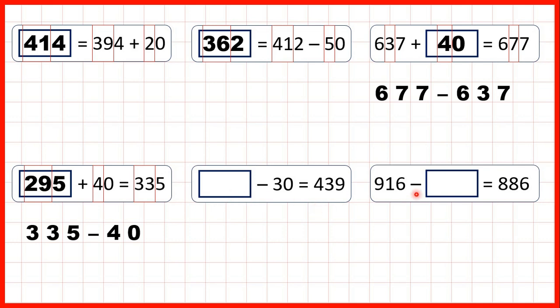Now we have some missing number subtraction problems. And in this first one, it's the first number of our subtraction that's missing. So we have something minus 30 equals 439. Now when we have the first number missing, we can use addition to find our missing number, because subtraction problems can always be read backwards as addition problems.